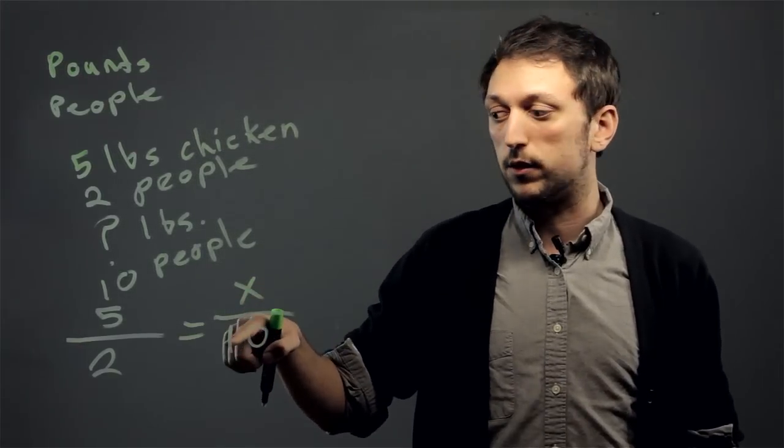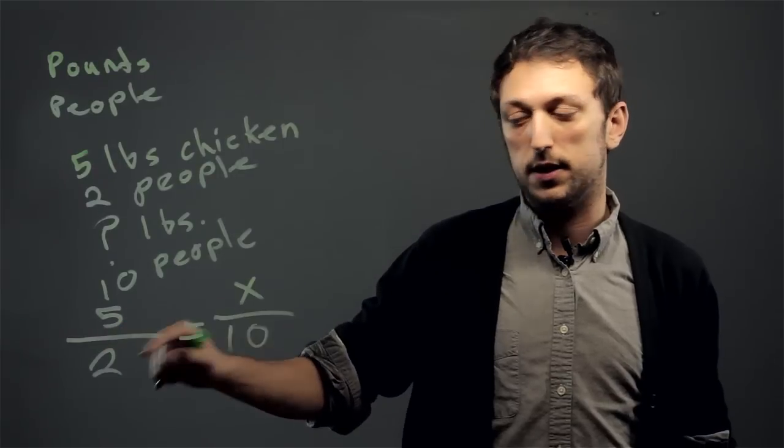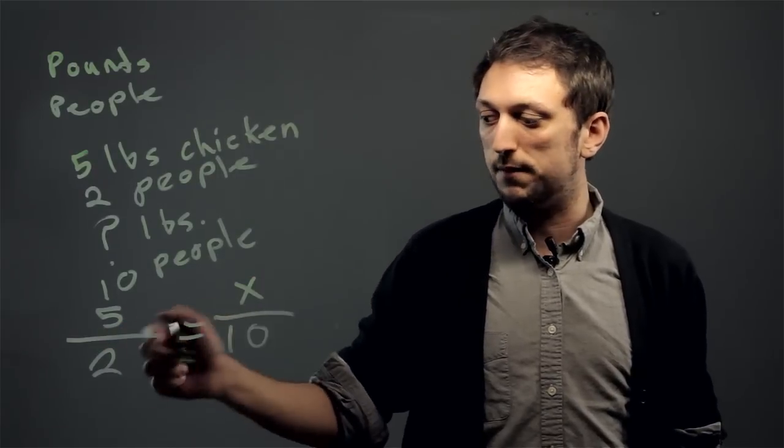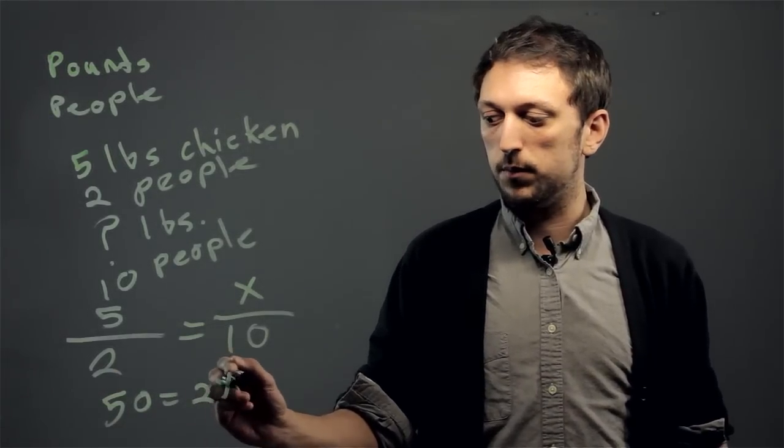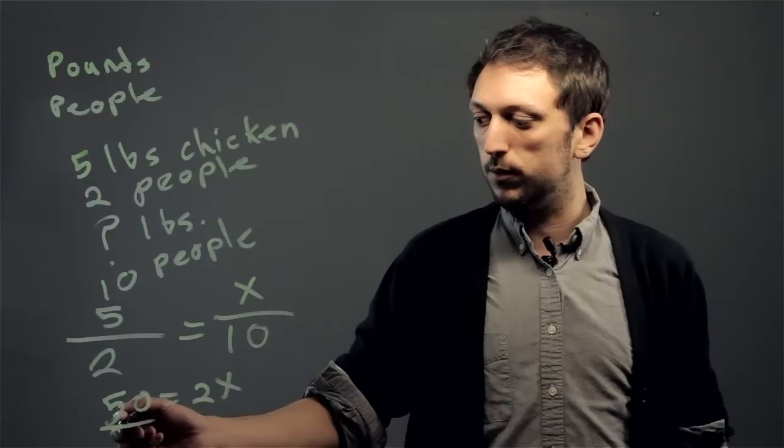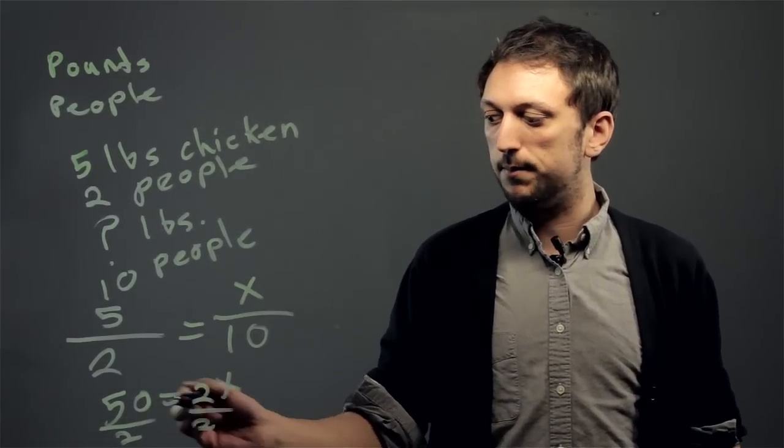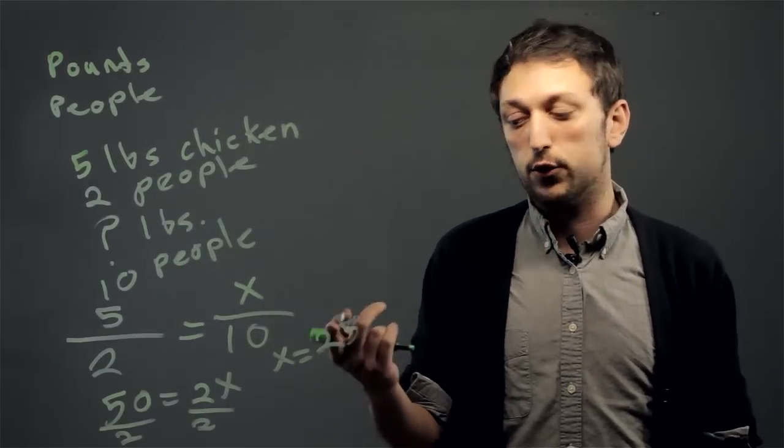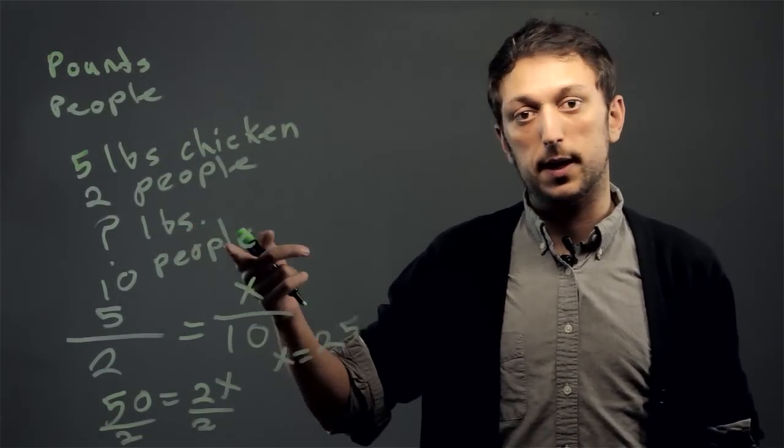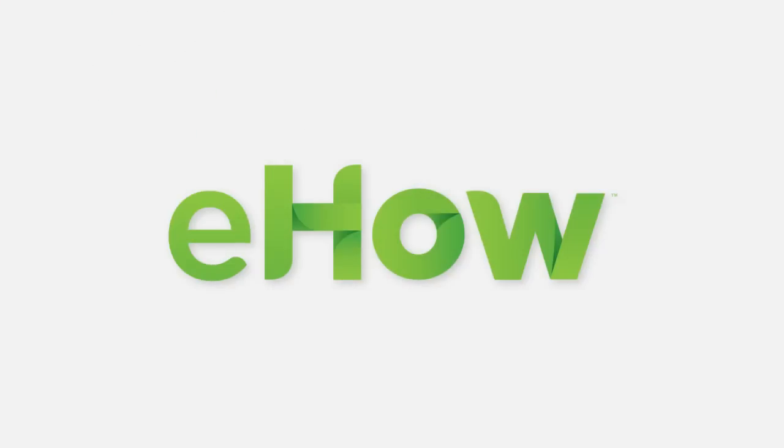So five times ten is 50, and two times x is 2x, and then we divide each side by two and we get x equals 25 pounds. We would need 25 pounds of chicken for ten people.